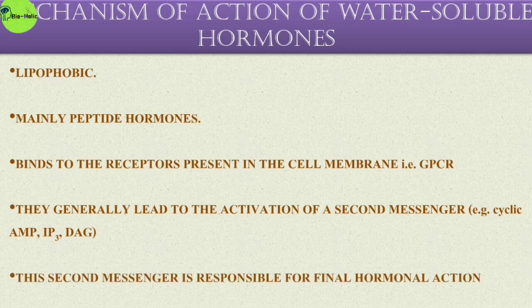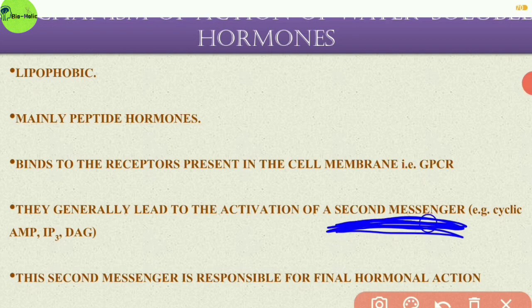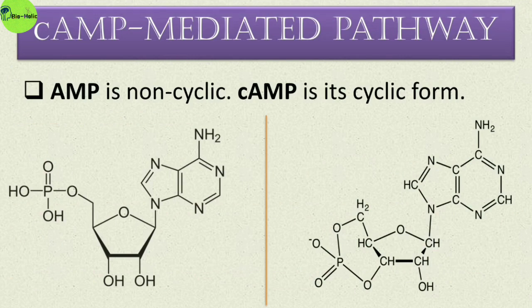The second messenger is responsible for the final hormonal action. The G protein coupled receptor involves two pathways: first, the cAMP mediated pathway. cAMP means cyclic adenosine monophosphate — it is a cyclical form of adenosine monophosphate, and the cyclic structure is the only difference between AMP and cAMP.